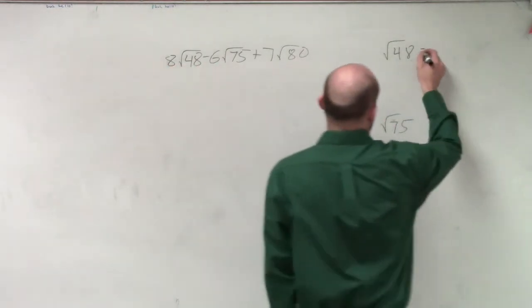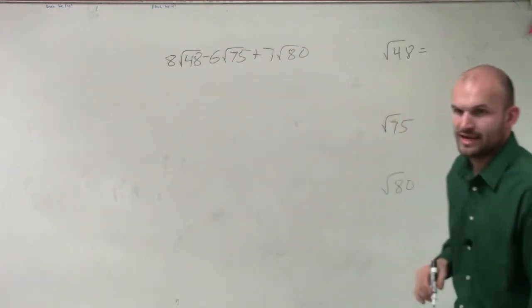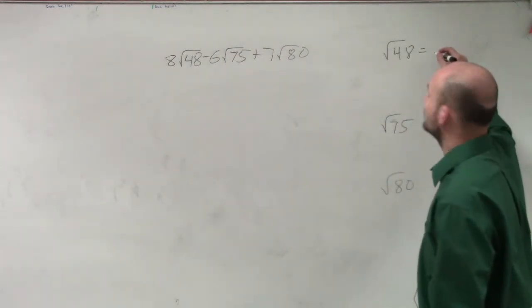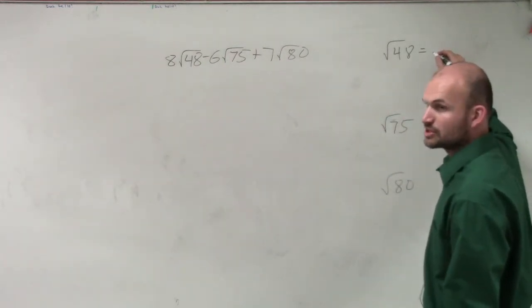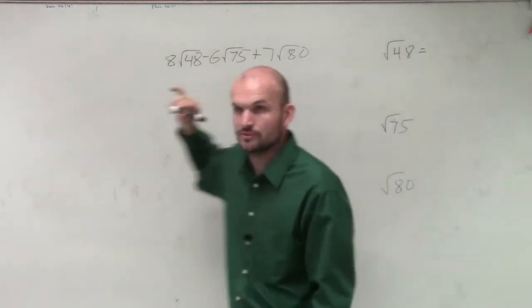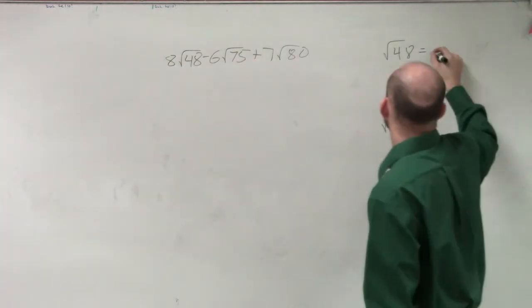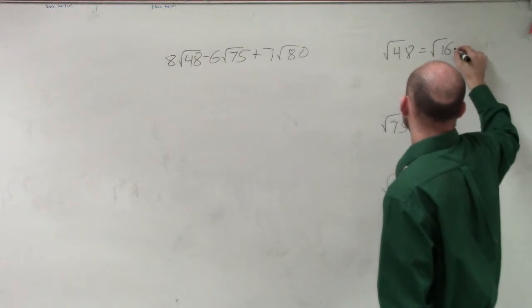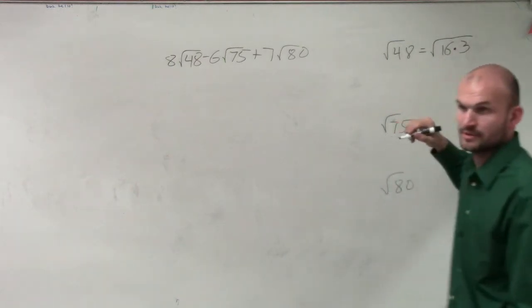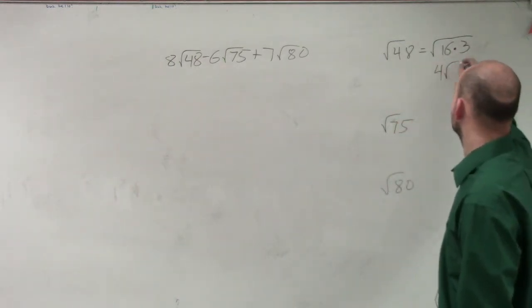So I say, let's do 48. 48 can be, what's the largest number? We have 16, 32, 48. Square root of 16 times 3. Square root of 16 is 4, square root of 3.